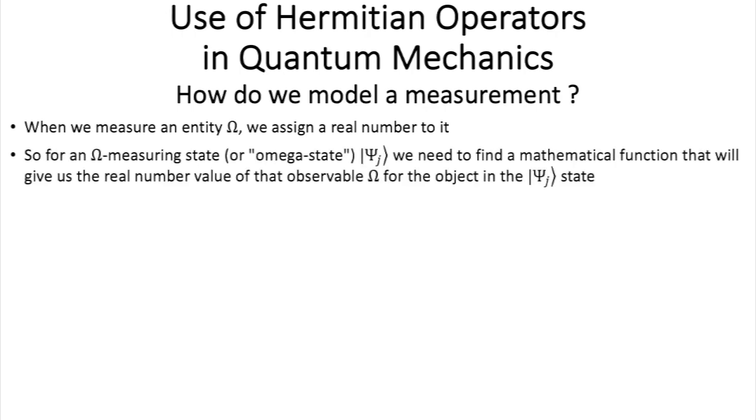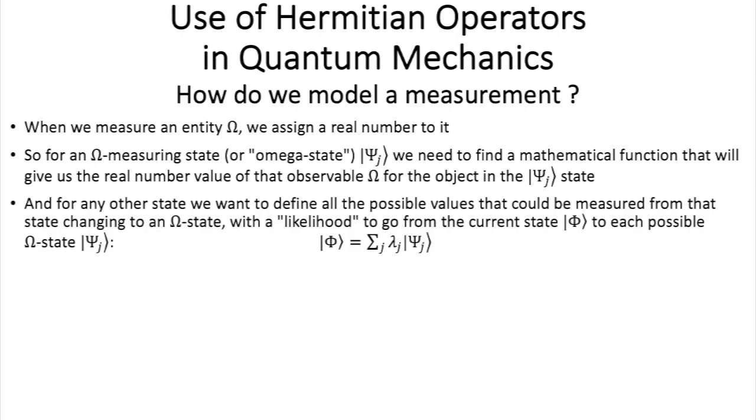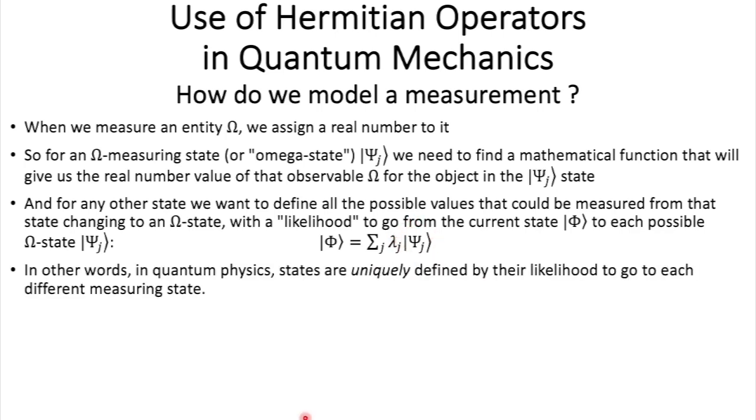So, for an omega state, psi j, we need to find a mathematical function that will give us the real number value of that observable omega for the object which is in a psi j state. And for any other state, we want to define all the possible values that could be measured from that state, changing to an omega state, where is the likelihood to go from the current state phi, for instance, to each possible omega state psi j.